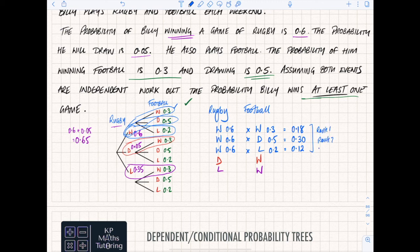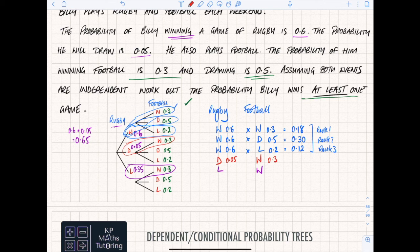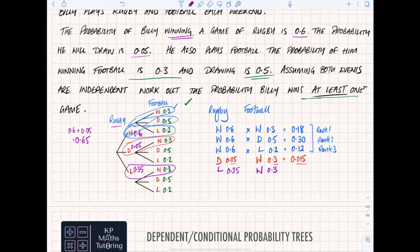Now the draw route: 0.05 times 0.3. Remember I can't go any other routes from here because they wouldn't count as winning at least one game. That becomes 0.015 - five times three is 15, but there are two decimal places and one decimal place so you need three decimal places total. The last route: 0.35 times 0.3, which gives an answer of 0.105.